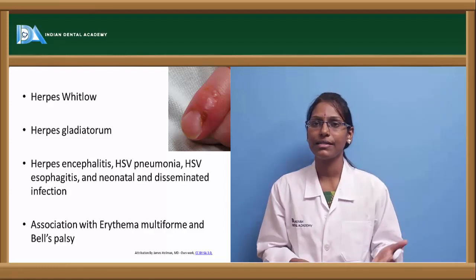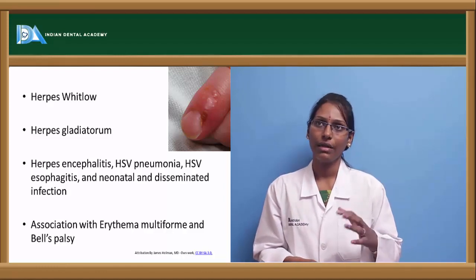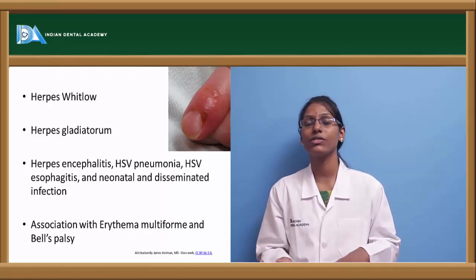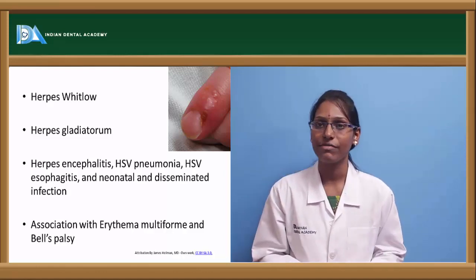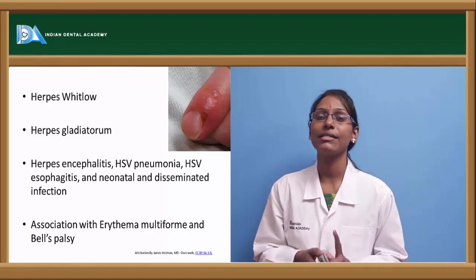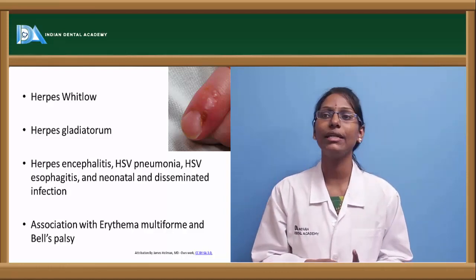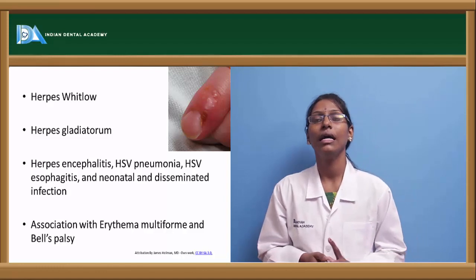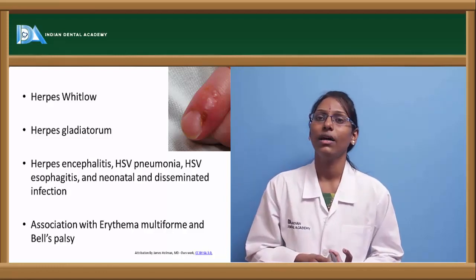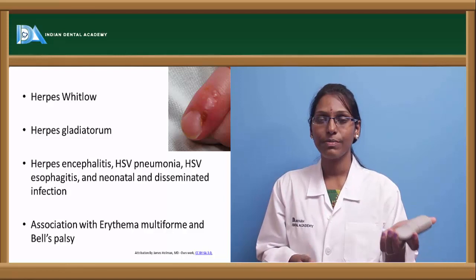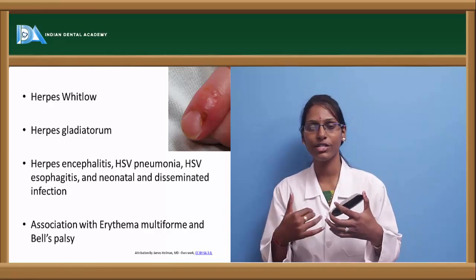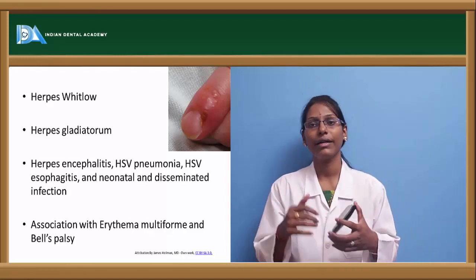In severe cases where herpes involves other systemic organs, it gives rise to complications such as HSV encephalitis, HSV pneumonia, HSV esophagitis, and neonatal and disseminated infections. Neonatal HSV is usually seen when the mother is infected during her term and the child gets HSV by direct contact.